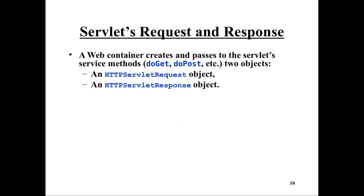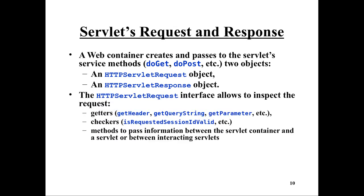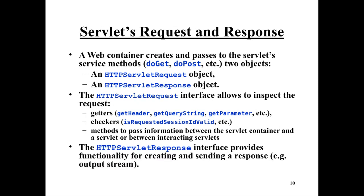When the doGet, doPost, or similar method is called in our servlet class, that method receives two objects: the HttpServletRequest object and the HttpServletResponse object. The request object contains getters to get information about the request, like reading HTTP headers or getting HTTP parameters. The response object provides methods for creating the response, such as setting HTTP headers. It also has an output stream, and whatever is written to that output stream will be sent to the browser.